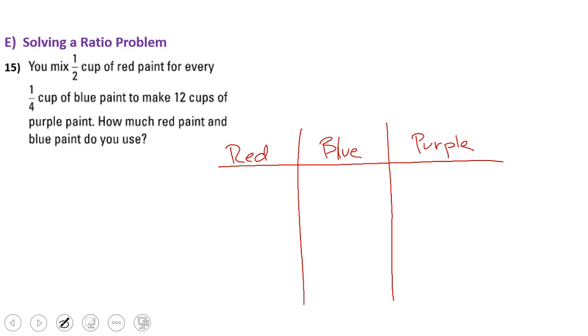And I know, because it tells me, that I mix 1.5 cup of red to 1.4 cup of blue to make my purple paint. If I only do 1.5 cup and 1.4 cup, I've only made 3.4 cups of purple. I eventually want to get down here to 12 cups. So I want to find out how much red and how much blue. So right now, I've got to work my way.